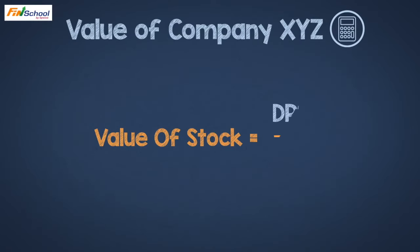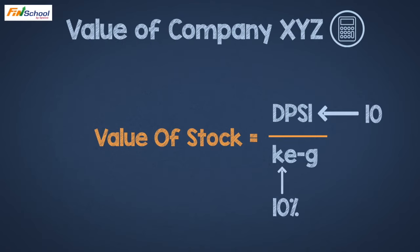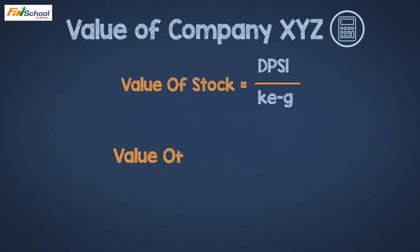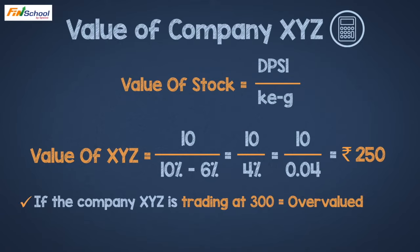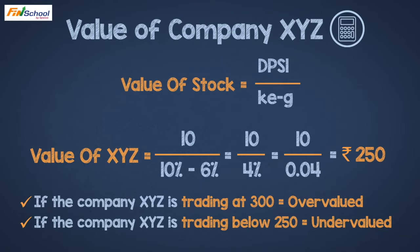For example, if you want to find the value of Company XYZ based on Gordon's Growth Model, and the next year's expected dividend is Rs. 10, KE is 10%, and growth rate is expected to be 6%, then the value of XYZ = 10 / (10% - 6%) = 10 / 4% = 10 / 0.04 = Rs. 250. This is the price per share of Company XYZ. If the company is trading at Rs. 300 per share in the stock market, then the company is overvalued.